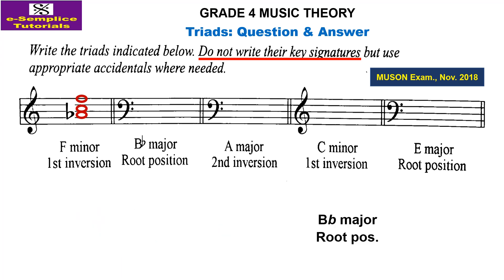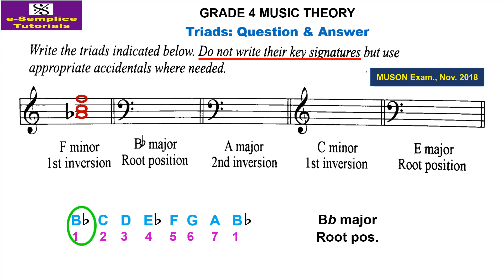Next is B flat major, root position. The notes in B flat major have key signature accidentals which are B flat and E flat. The tonic, the mediant, the dominant — stacking gives B flat, D, and F. Let's put these on the stave: B flat first, D, then F.